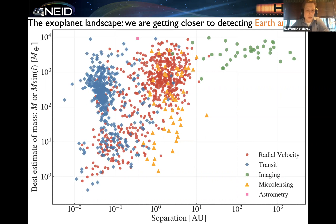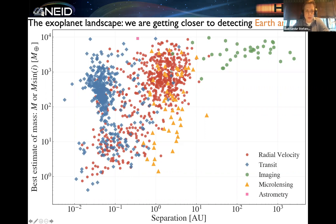In this plot, I'm showing the current best estimate of the mass of a planet as a function of orbital separation, where I've highlighted in different colors the different detection techniques. What jumps out right away is the inherent different sensitivities that the different detection techniques have. Direct imaging is more sensitive to planets further out, while transit and radial velocity methods are more sensitive to planets that are closer in. Another thing that jumps out is this part of the plot where true Earth analogs live, which is particularly sparsely populated.